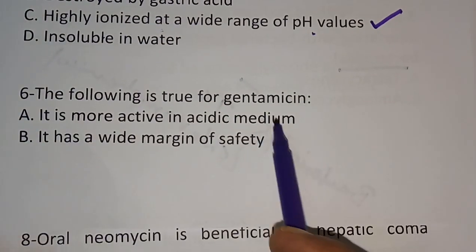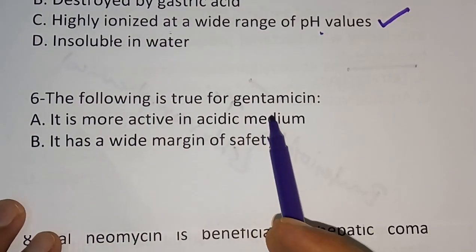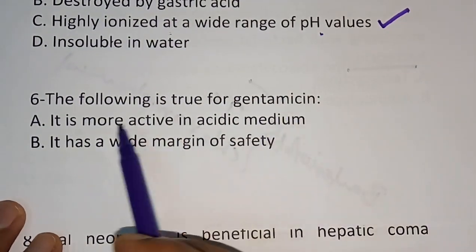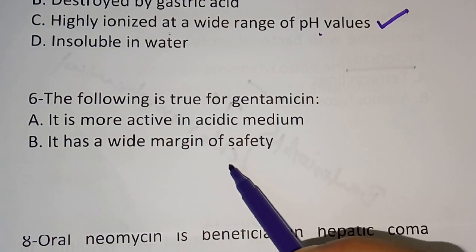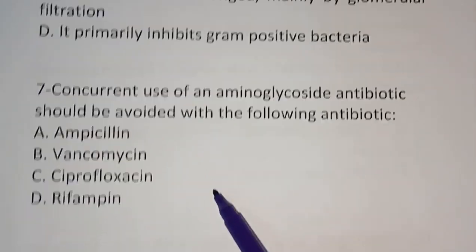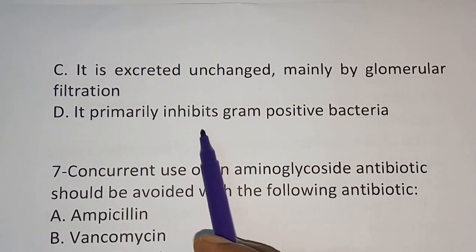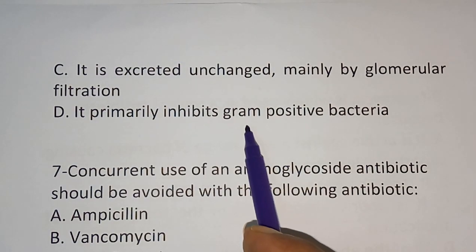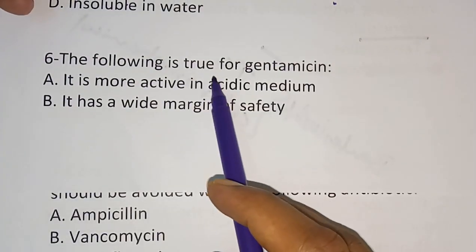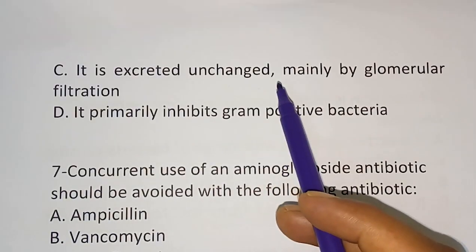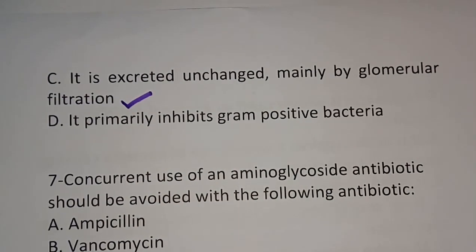Question 6: The following is true for gentamicin. Option A: it is more active in acidic medium. Option B: it has a wide margin of safety. Option C: it is excreted unchanged mainly by glomerular filtration. Option D: it primarily inhibits gram-positive bacteria. The correct answer is Option C — gentamicin is excreted unchanged mainly by glomerular filtration.